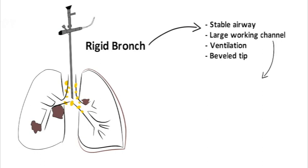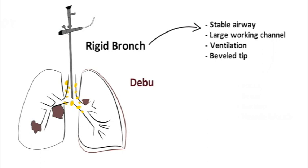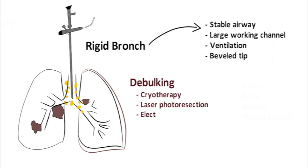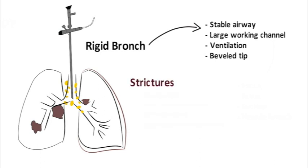The large working channel allows the use of specialized instruments such as forceps, scissors, and large bore suction catheters. Additionally, you can also pass an entire flexible bronchoscope through, if needed for the case. Airway tumor debulking is commonly achieved with modalities such as cryotherapy, laser photoresection, electrocautery, and argon plasma coagulation, or APC. Airway strictures are commonly treated with electrocautery incision, balloon dilation, and stent placement.